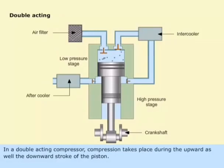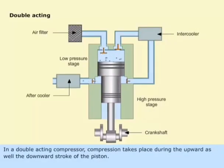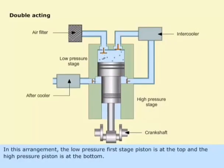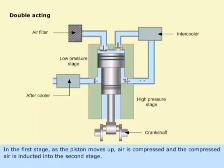In a double-acting compressor, compression takes place during the upward as well as the downward stroke of the piston. In this arrangement, the low-pressure first stage piston is at the top and the high-pressure piston is at the bottom. In the first stage, as the piston moves up, air is compressed and the compressed air is inducted into the second stage.